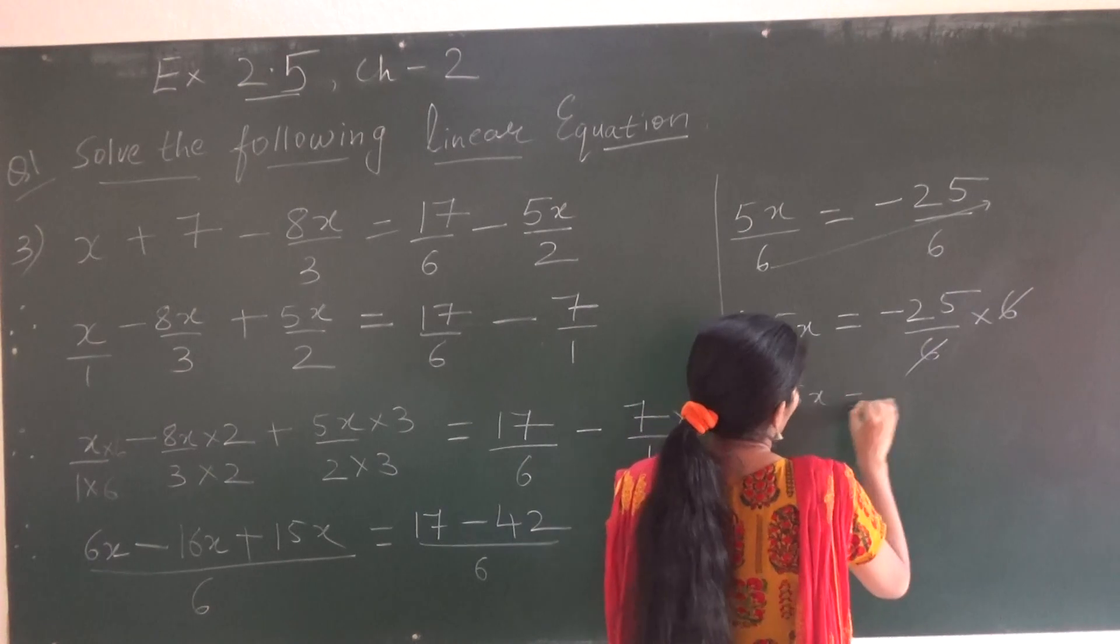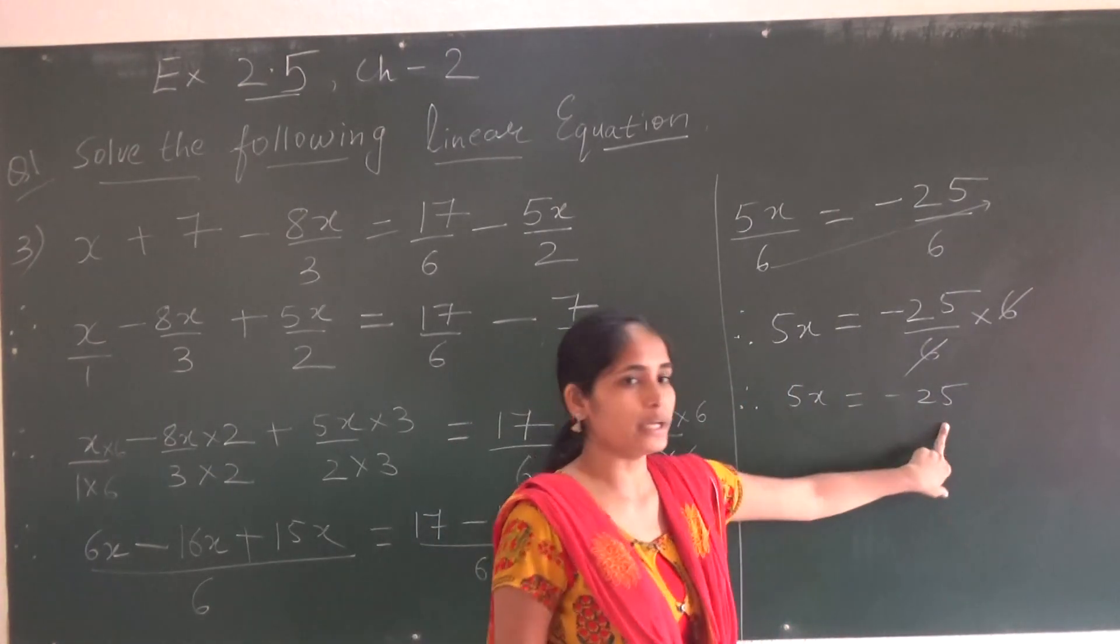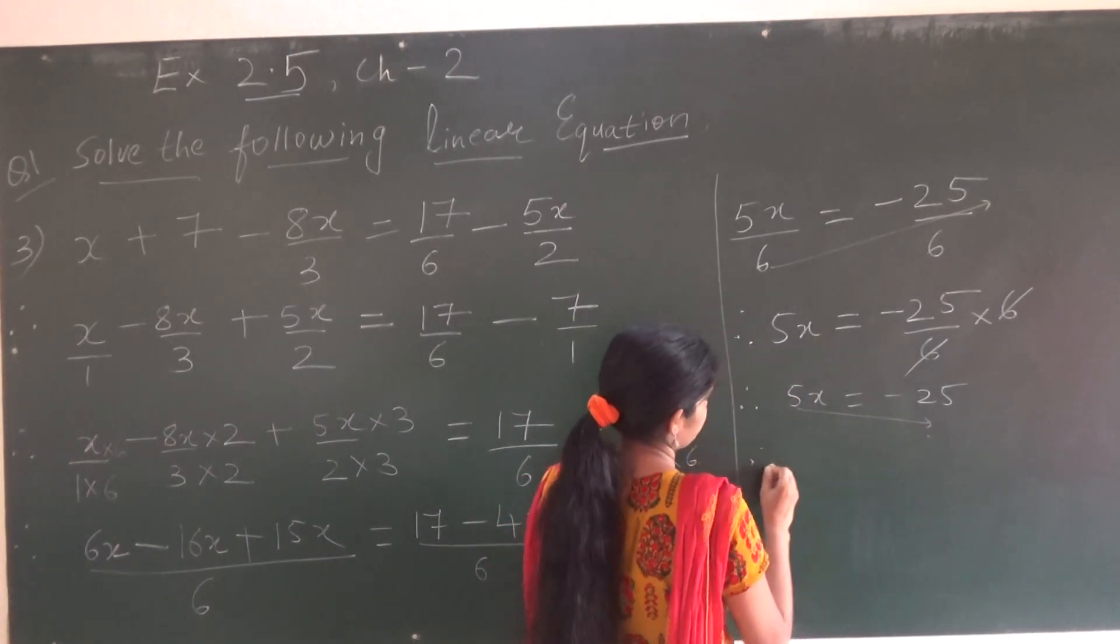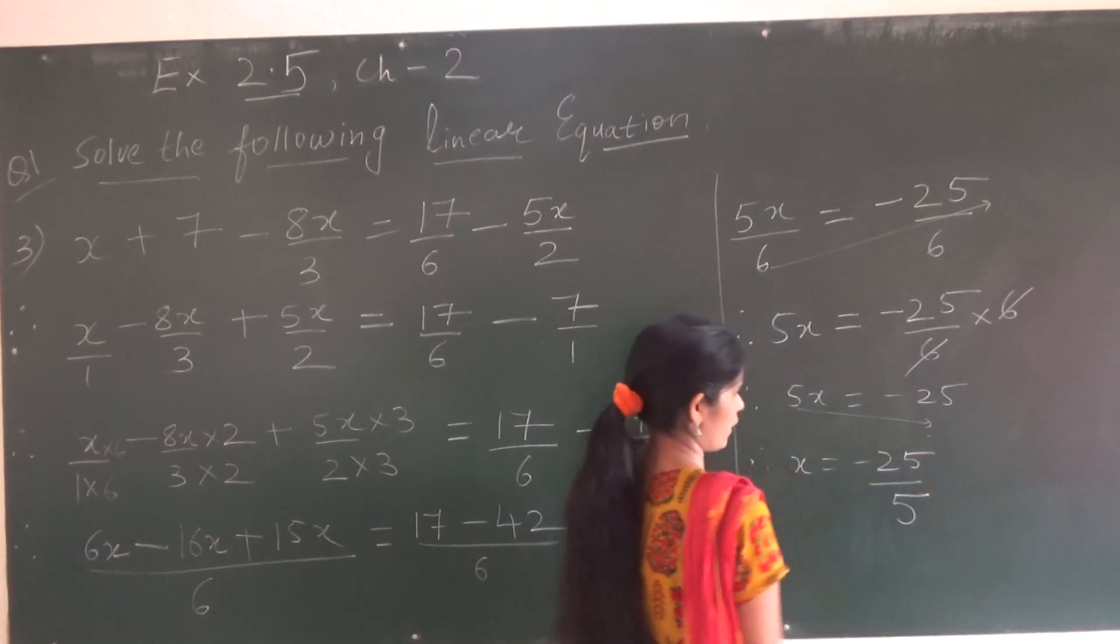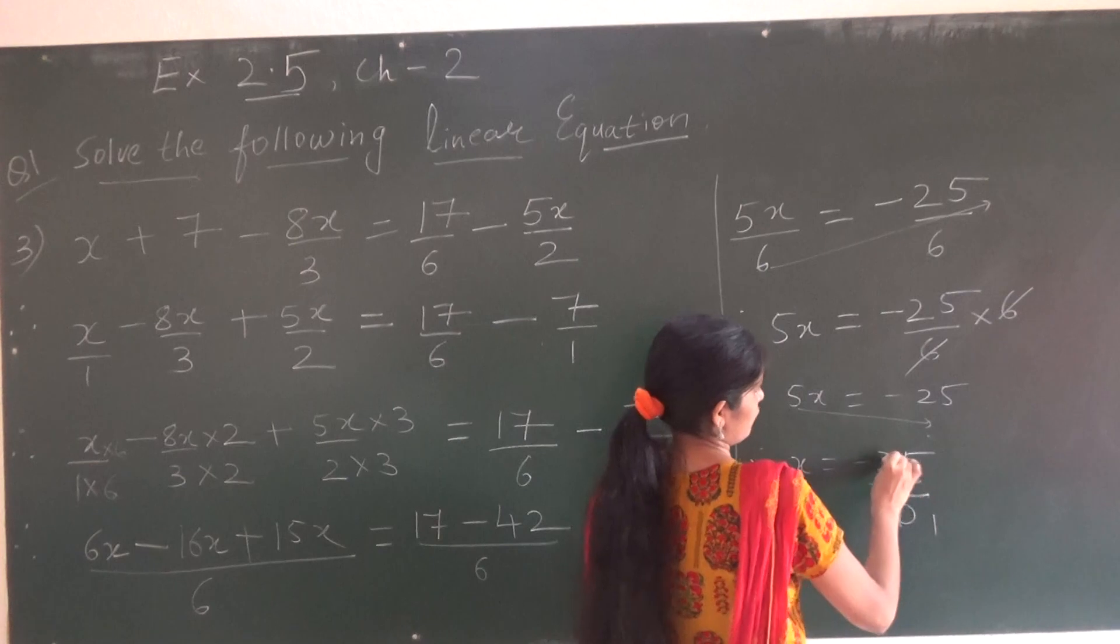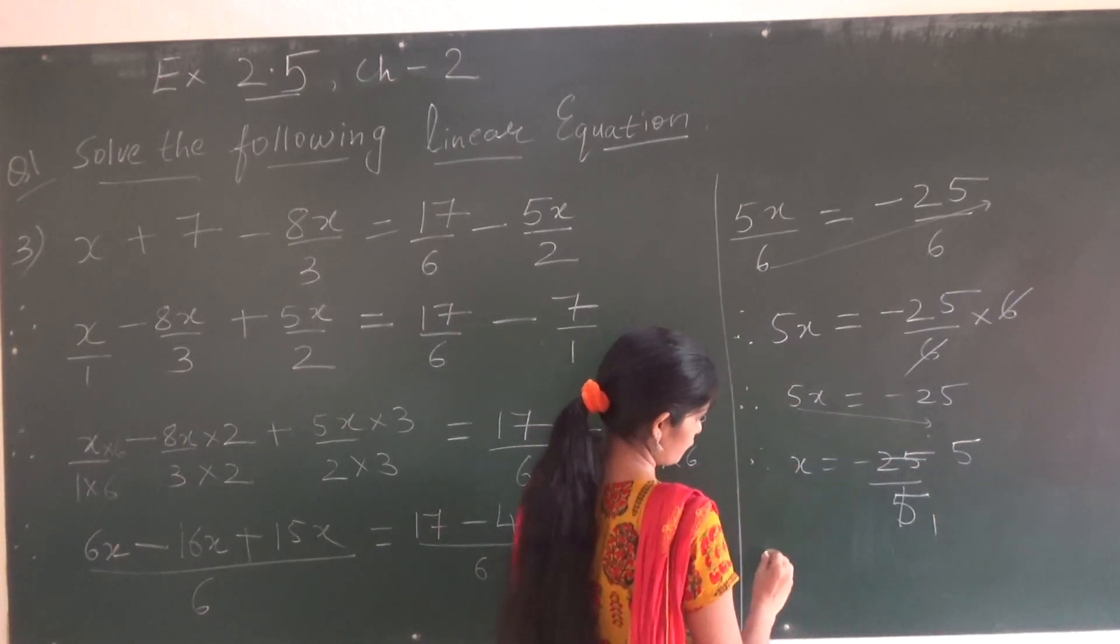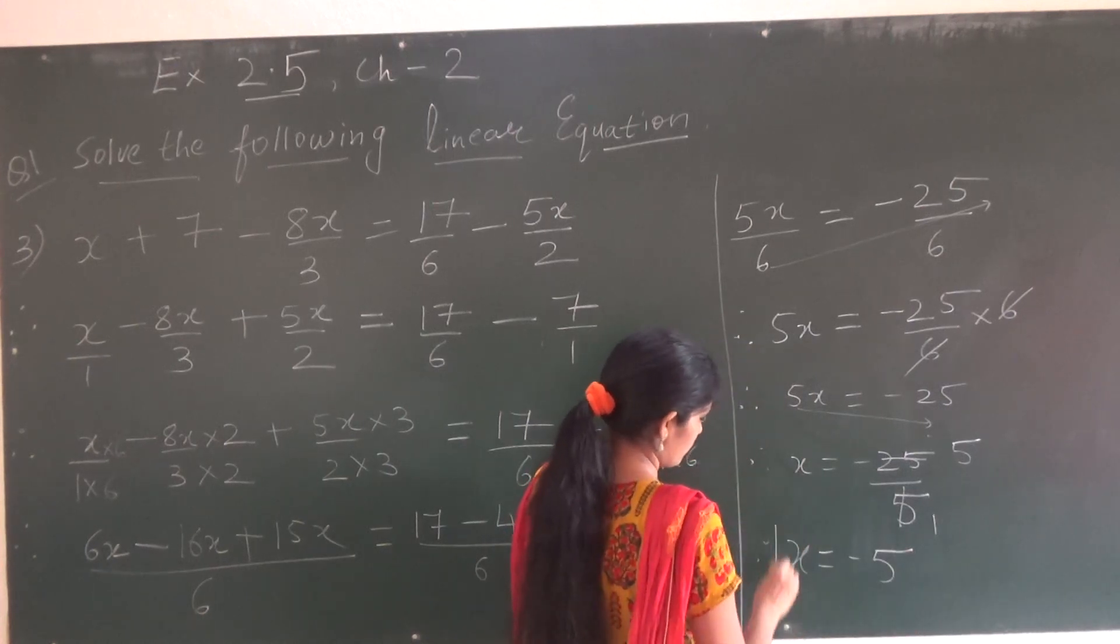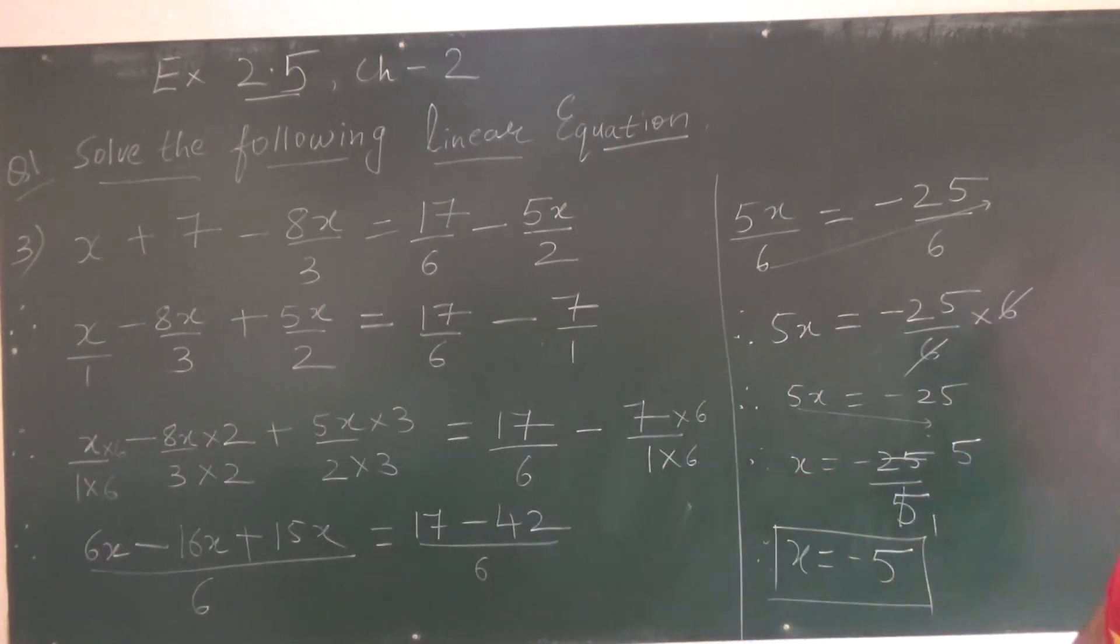So 5x equals to minus 25. This is left out. This 5 we have to take down. So this 5 will be shifted here. So x equal to minus 25 upon 5. 5 1's are and 5 5's are, so minus 5 is left. So x equal to minus 5. This is our answer of third sum. So x equal to minus 5.